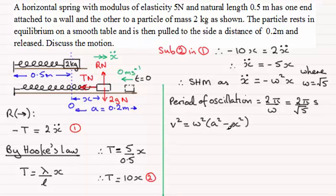And with this equation, now that we've got omega, we know a was 0.2 metres. Then we can work out the speed at any displacement x. Now one common problem is to work out the maximum speed. And that maximum speed is going to occur when x equals 0.